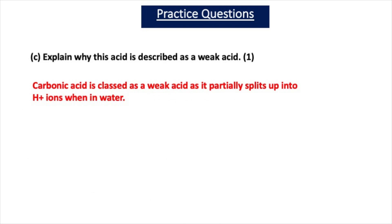For Question 2C, explain why carbonic acid is described as a weak acid. Carbonic acid is classed as a weak acid as it partially splits up into H+ ions when in water — one mark.